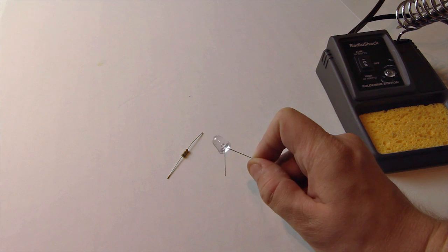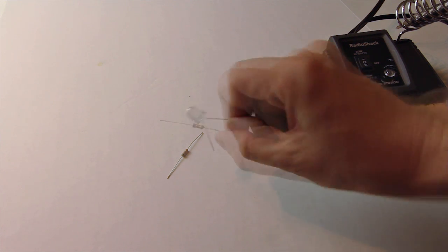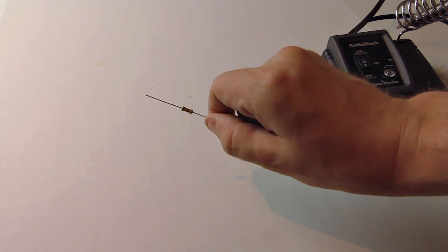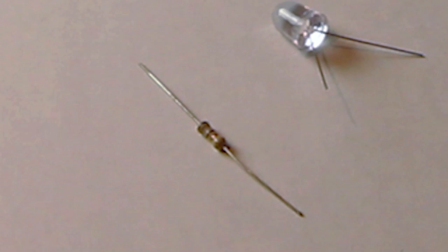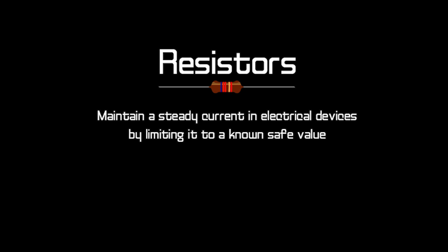And now we've got the fun part. I've got my hands on a 3.5 volt super bright LED and also a 68 ohm resistor. Don't worry, you can pick these up for pennies on the dollar at your electronics store. Why a resistor? Well, they maintain a steady current in electronic devices by limiting it to a known safe value.